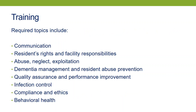The rule lists topics that must be included in training, including communication, resident rights, abuse, neglect, and exploitation, and more. One particularly notable requirement is that for the first time, all staff will have to be trained in dementia management — which from our perspective is a very good requirement. However, the regulations don't specify how much training must be provided; that's to be determined by the facility assessment. This requirement for all-staff training on these topics goes into effect in phase three, with the exception of training on abuse, neglect, and exploitation, which was already implemented with phase one.